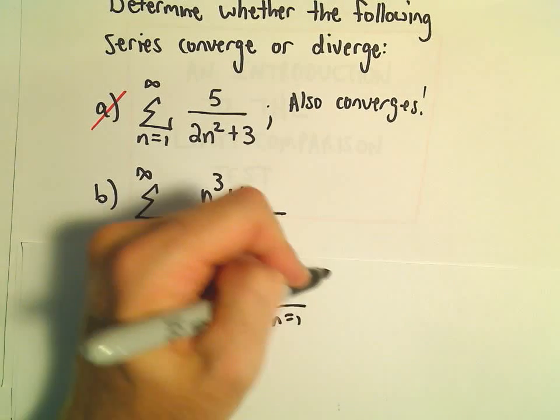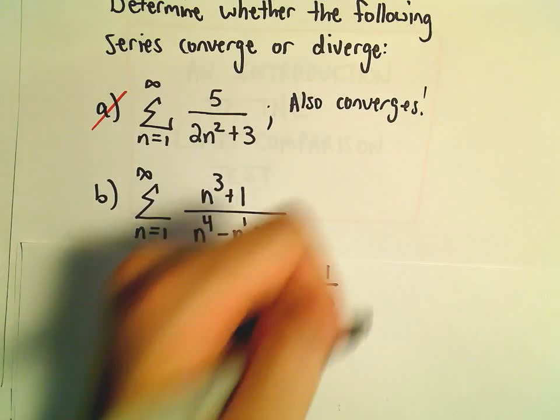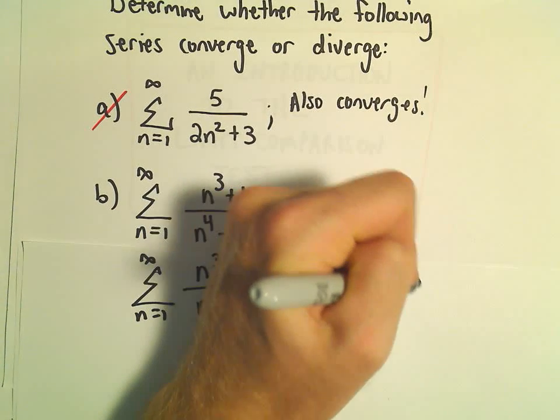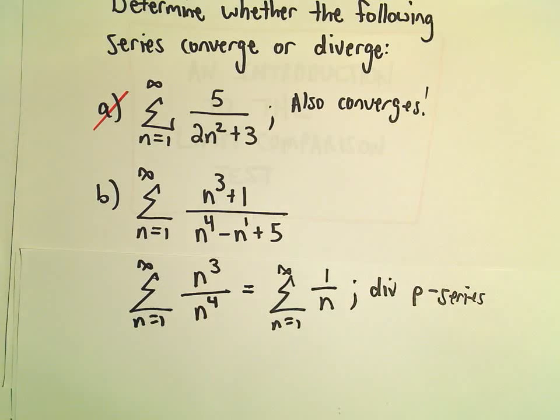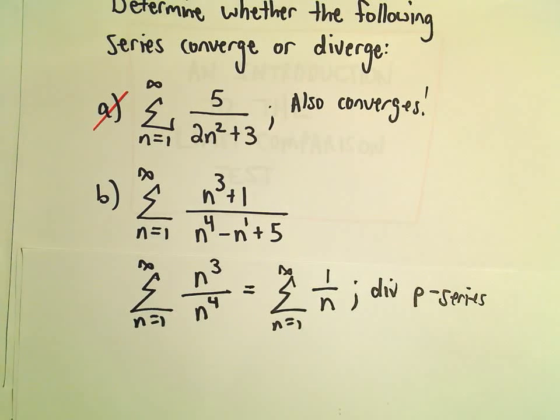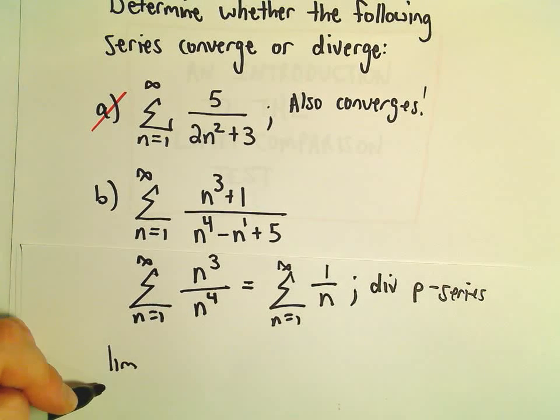Well, n to the 3rd over n to the 4th, that's just 1 over n. And we know that this is a divergent p-series. Okay, so we've got our series. All the terms are going to be positive here.